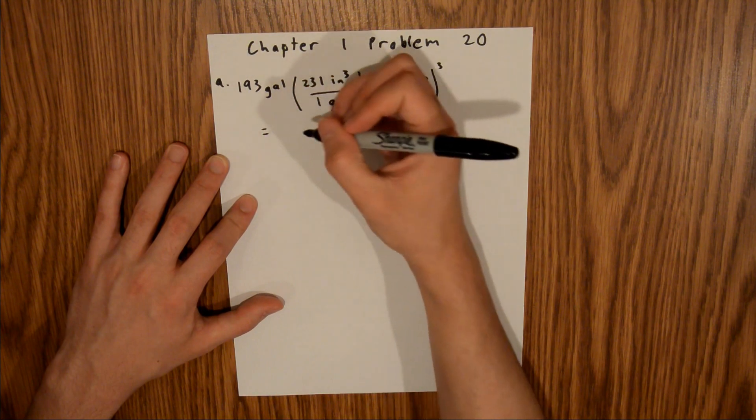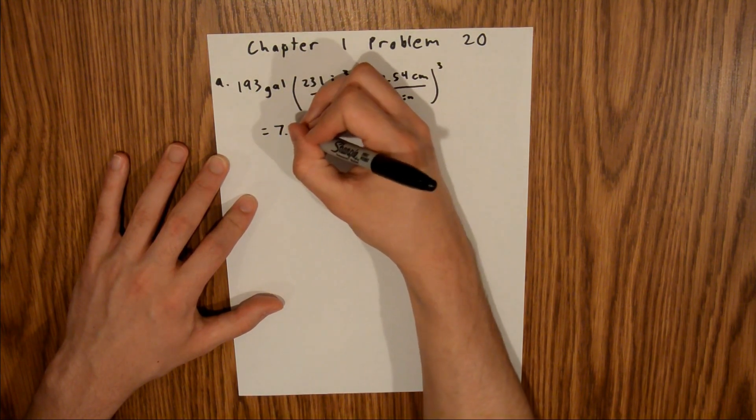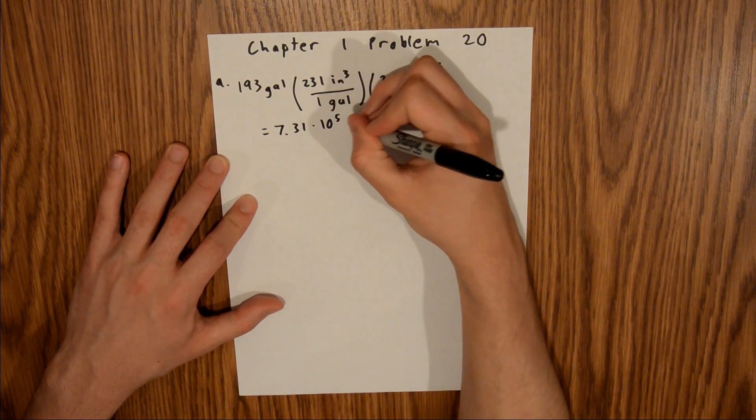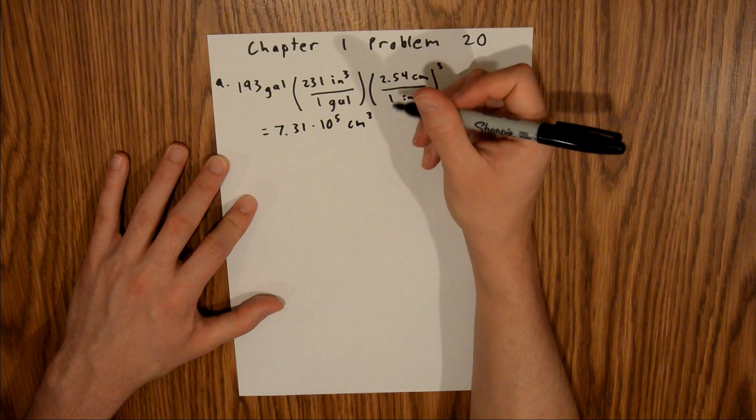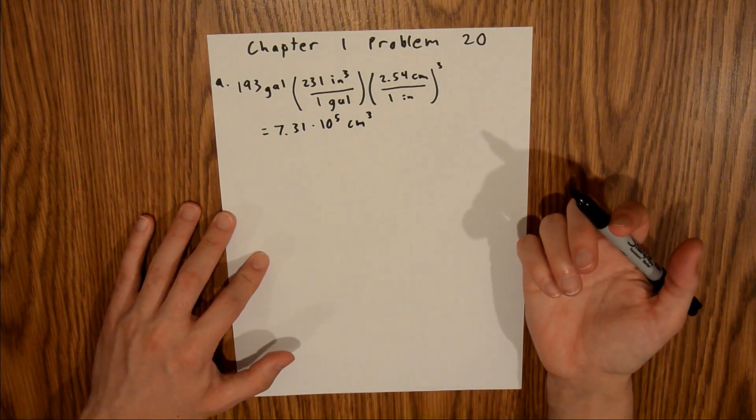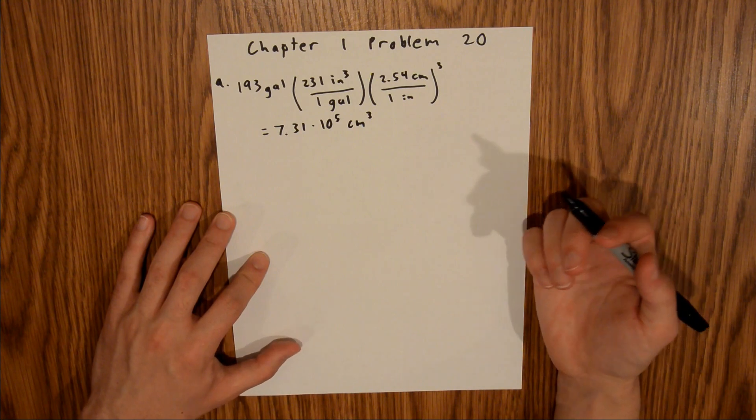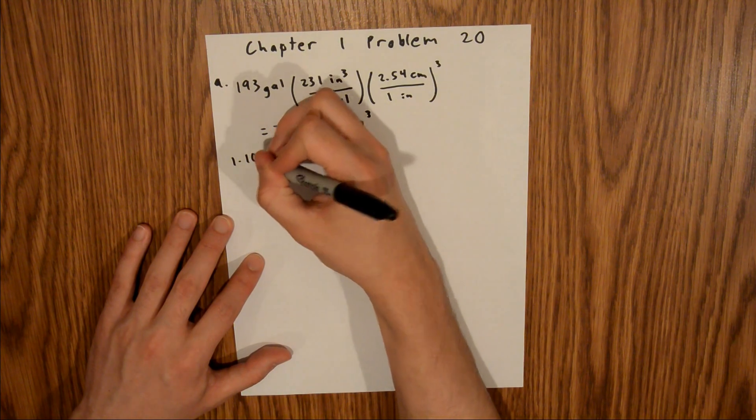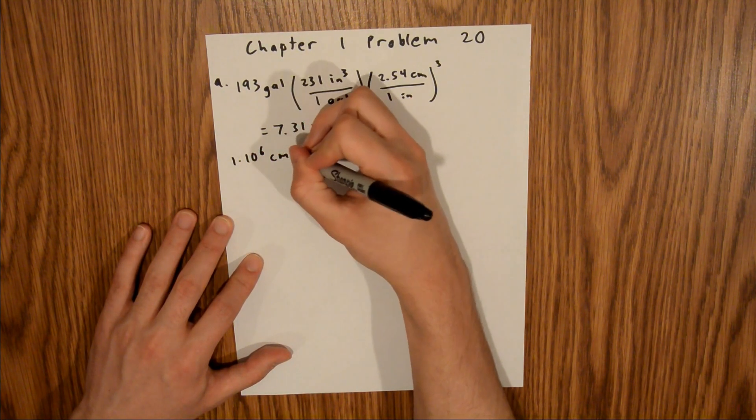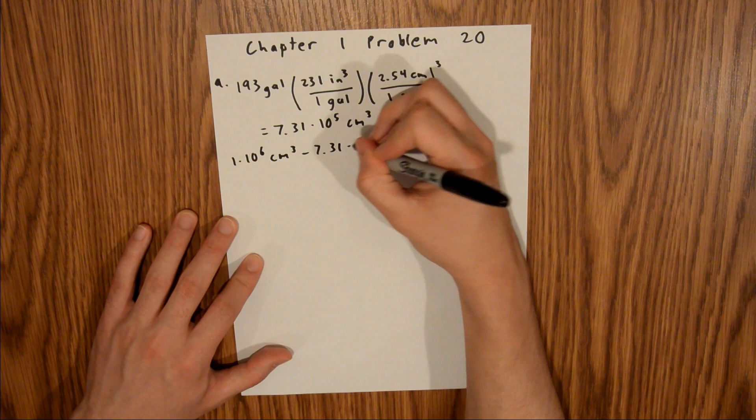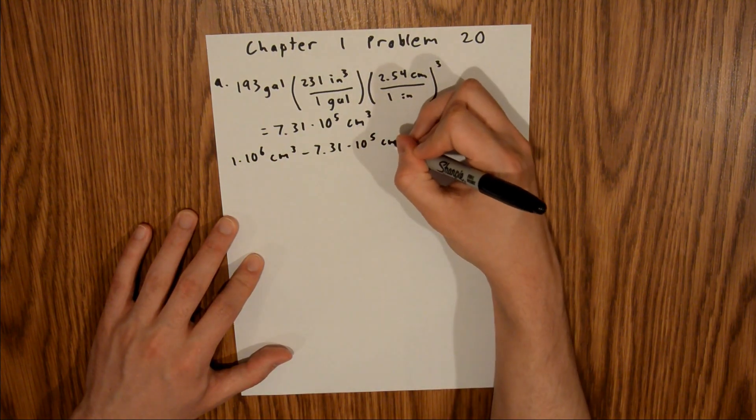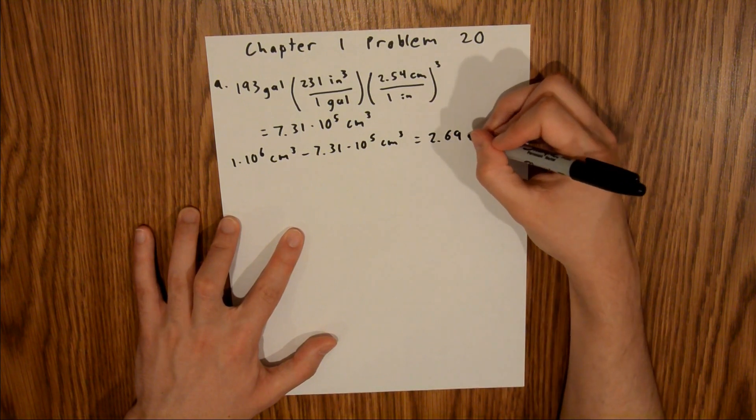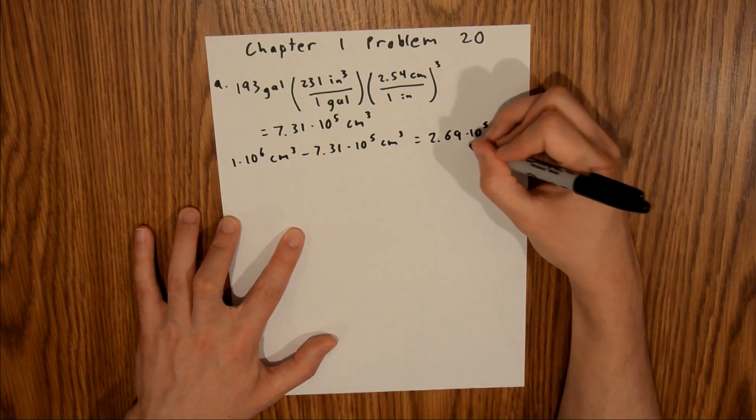And if you plug all that into your calculator, you should find that this is equal to 7.31 times 10 to the fifth centimeters cubed. And so now in order to find how short of 1 million cubic centimeters that is, we just have to subtract this from 1 million cubic centimeters, and so 1 times 10 to the sixth centimeters cubed minus 7.31 times 10 to the fifth centimeters cubed is equal to 2.69 times 10 to the fifth centimeters cubed short.